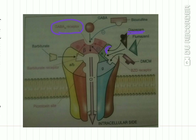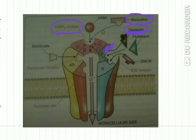Modulation of the benzodiazepine receptor increases chloride channel opening. Bicuculline, which is an antagonist to the GABA-A receptor, antagonizes the action of benzodiazepine. So when diazepam acts on the benzodiazepine receptor, it increases chloride uptake.